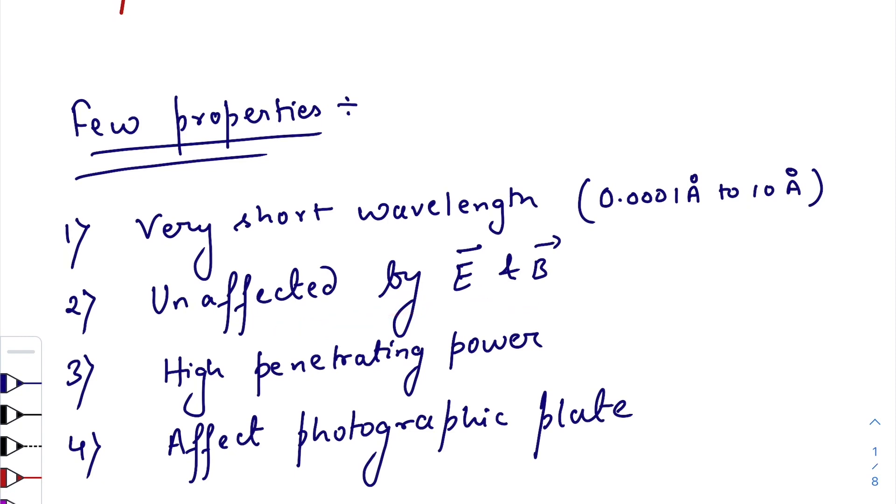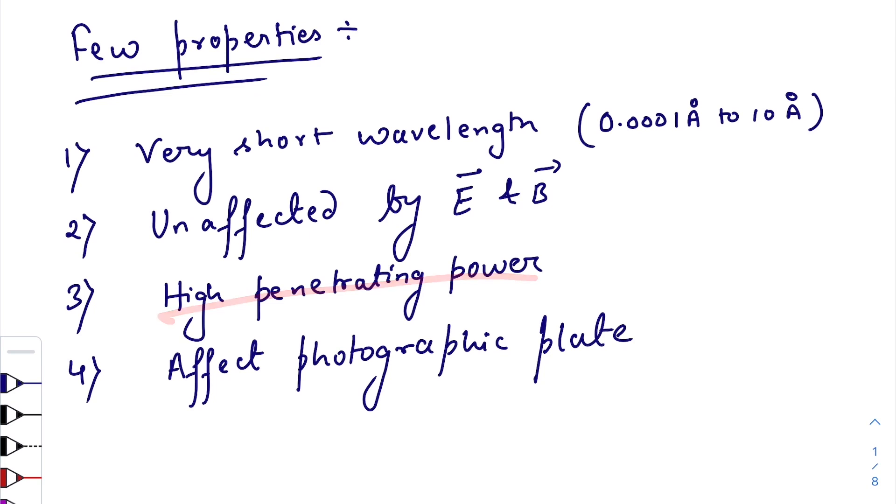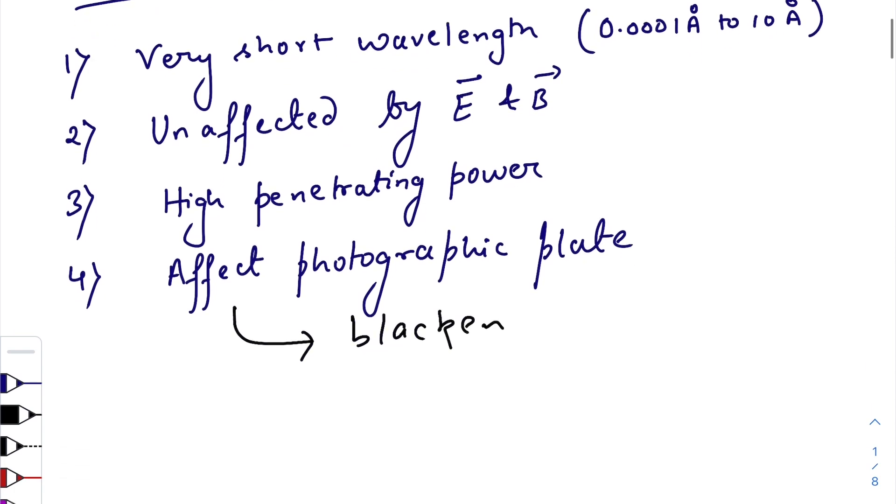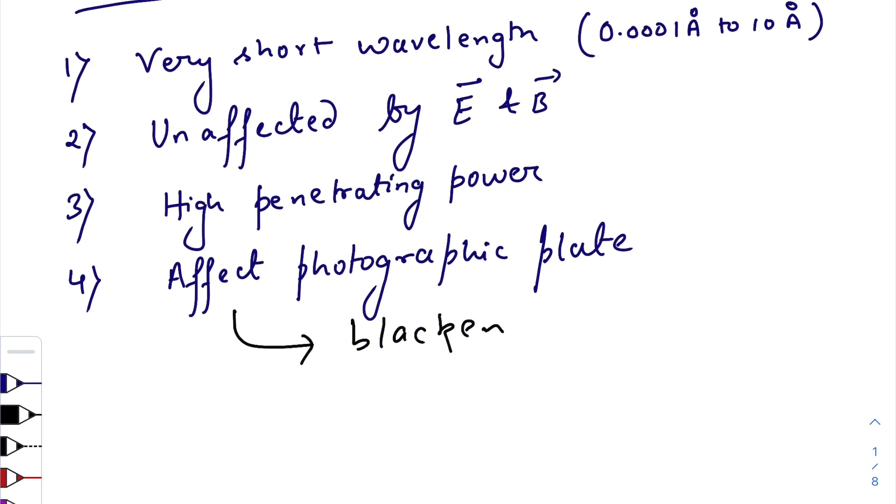They are unaffected by electric field and magnetic field, indicating they are not beams of charged particles unlike cathode rays. They travel in straight lines with the speed of light. They have high penetrating power. Shorter the wavelength, the greater is the power of penetration. They penetrate more in low density substances and less in high density ones. They affect photographic plate, meaning they blacken the photographic plate.